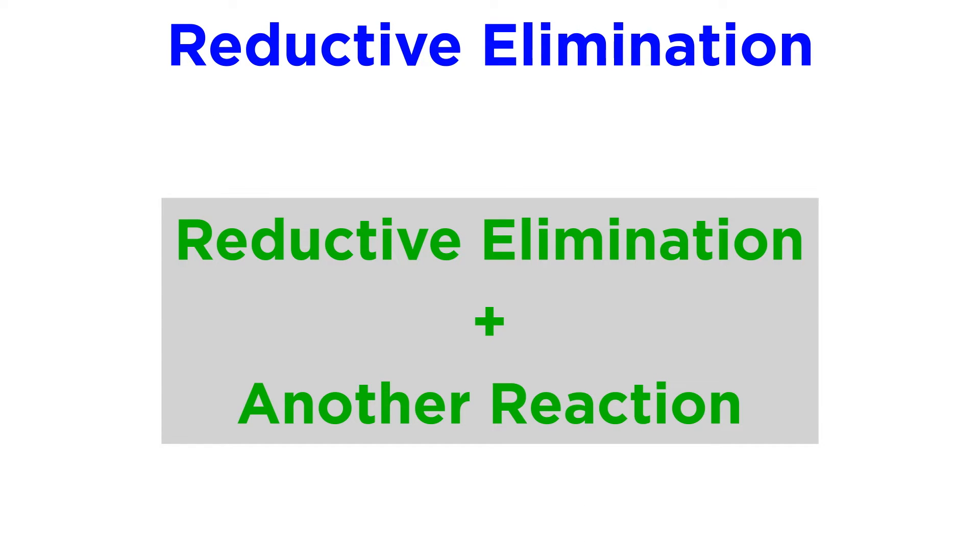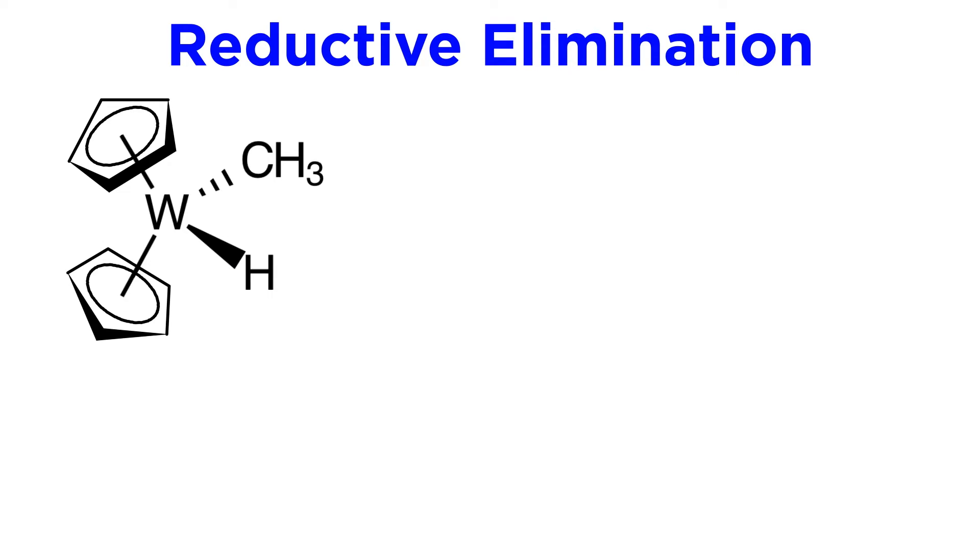Reductive elimination is quite straightforward mechanistically, and it is extremely common, often taking place in order to allow for another reaction to occur. Take for example this tungsten complex with two Cp ligands, a methanide and a hydride. Let's say this is to react with benzene in some manner. What is the count on this complex?